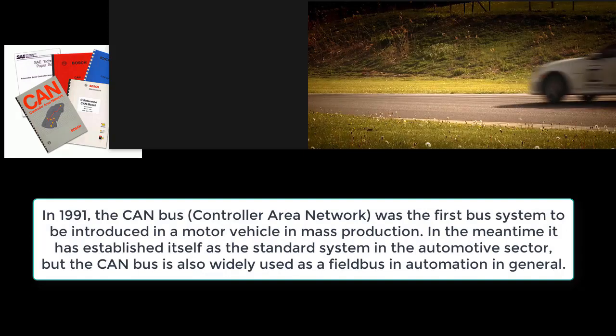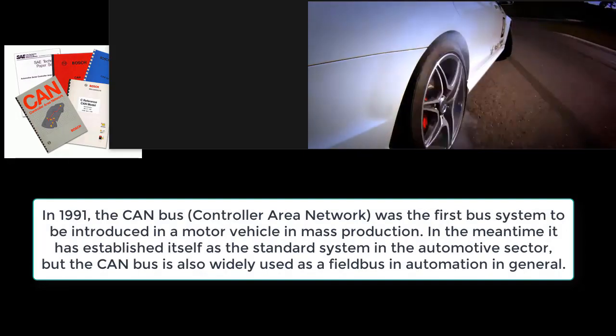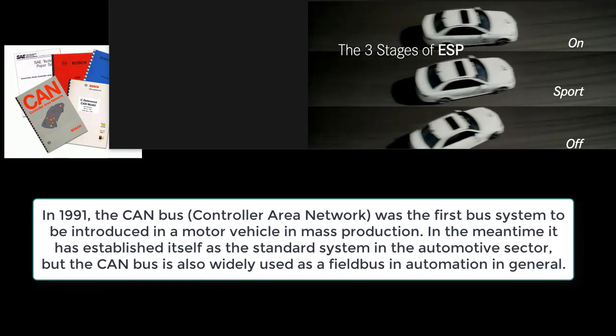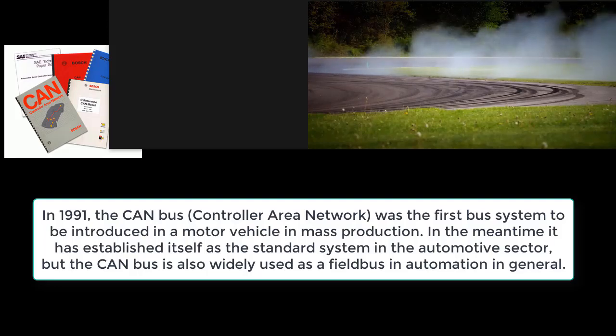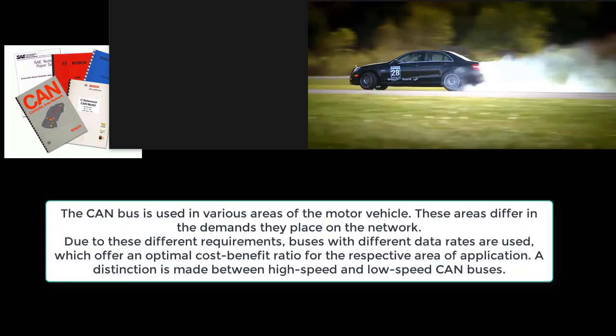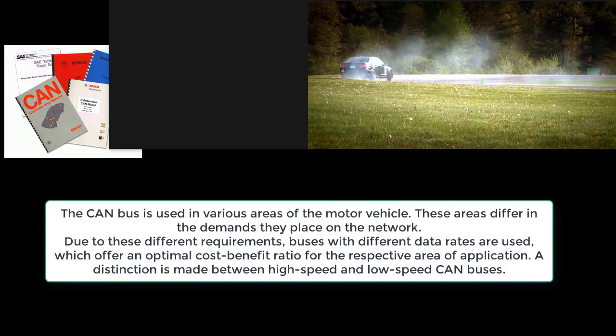In 1991, the CAN bus, controller area network, was the first bus system to be introduced in a motor vehicle in mass production. In the meantime it has established itself as the standard system in the automotive sector. The CAN bus is used in various areas of the motor vehicle. These areas differ in the demands they place on the network.